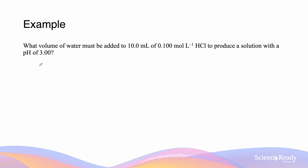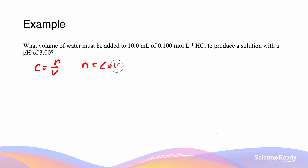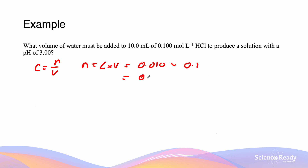Using C equals N over V, we're given V and C, so we can find N. N equals C times V, which is 0.010 L multiplied by 0.1 mol/L, giving N equals 0.001 mol.